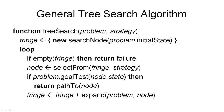Now we get to the first algorithm in this course: the general tree search algorithm. The algorithm is implemented as a function tree search that takes a search problem and a search strategy as input. The search problem is what we've seen before — consisting of four components: the initial state, the successor function, the goal, and the path cost function.